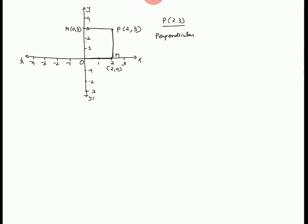Perpendicular on X axis gives foot M at (2, 0). On the X axis, any point like A or B has its Y coordinate as 0, so M is (2, 0). This is known as the foot of perpendicular.